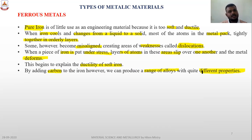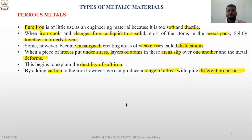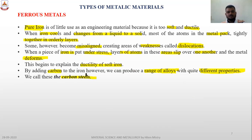For example, adding 0.08% carbon to iron gives raw iron, and adding 2.06% carbon produces plain carbon steel. By adding different percentages of carbon, we obtain different properties of a metal — and we call this carbon steel.